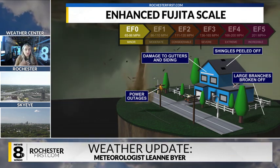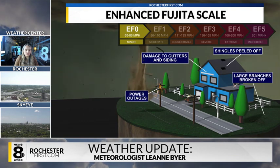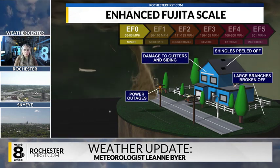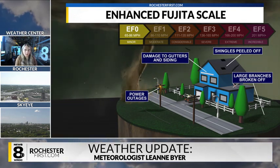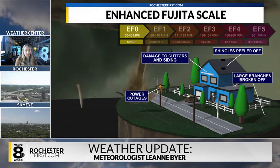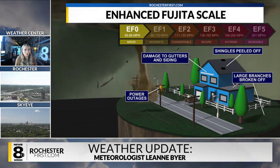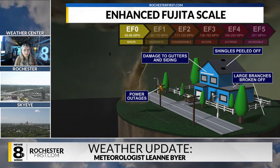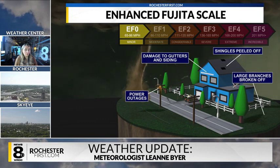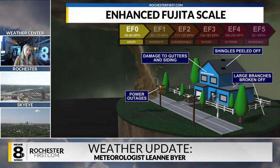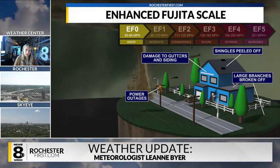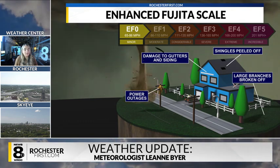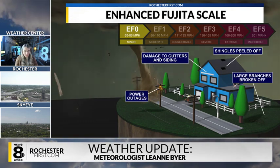The damages associated with EF0 tornadoes include damage to gutters as well as siding, shingles peeled off, large branches broken off, and power outages. The typical wind speeds for these tornadoes are usually between 65 and 86 miles an hour — some minor damage, not a whole lot, nothing that can't be fixed.